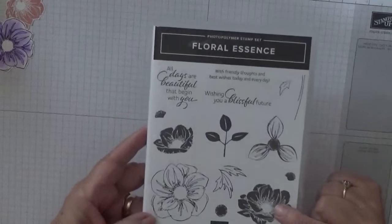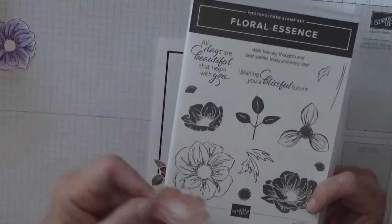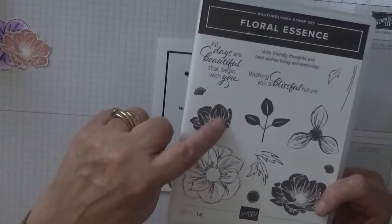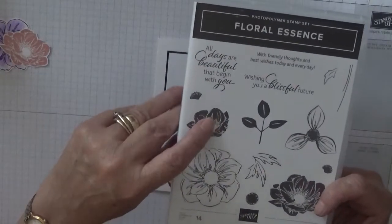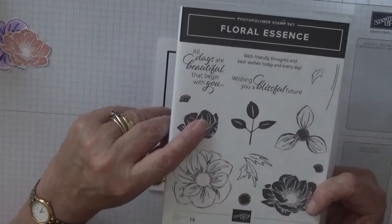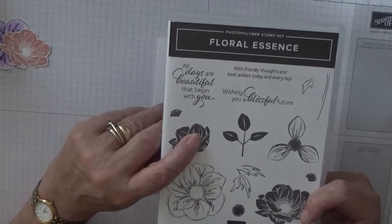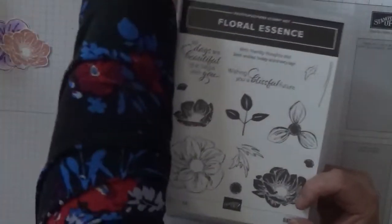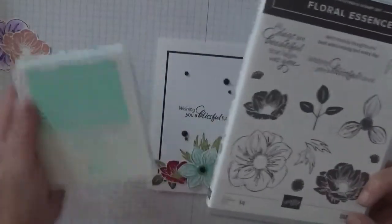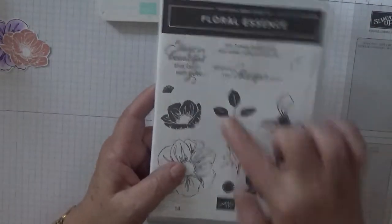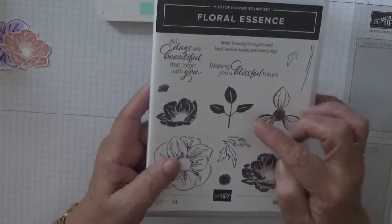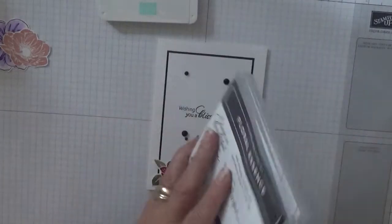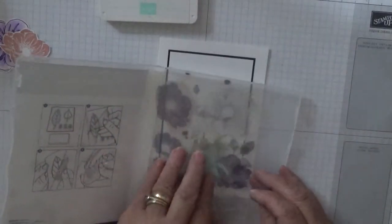I've already stamped and cut out that one which is in Blushing Bride, and we're going to stamp and cut out this one. We're going to stamp that in Coastal Cabana. We're going to do that and also punch out two leaves and stamp this image which I've never got out. So let me just get them out.